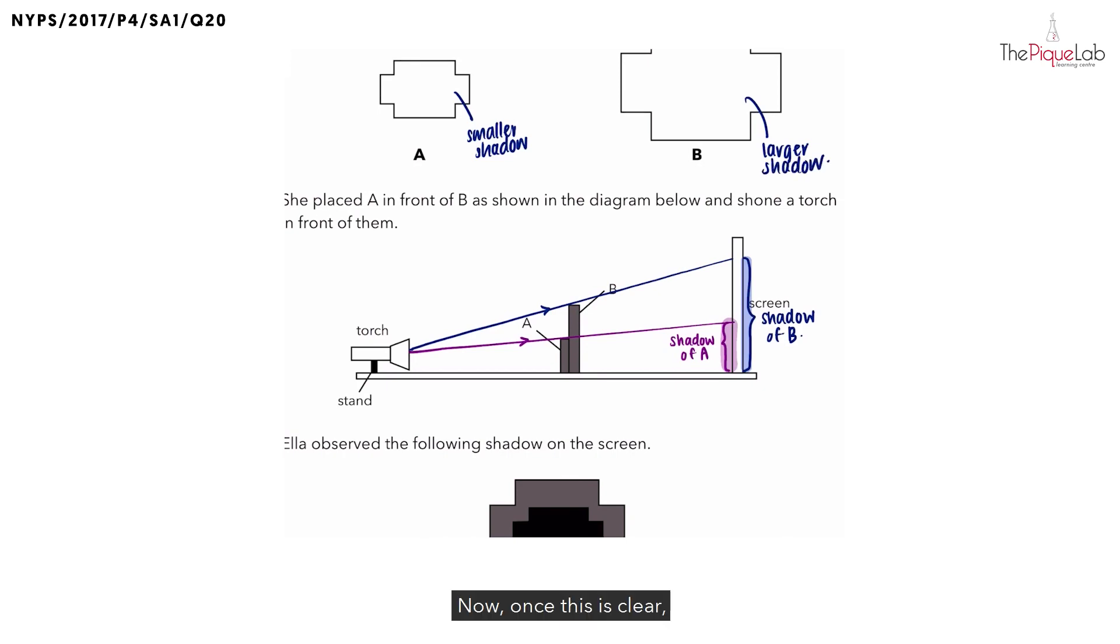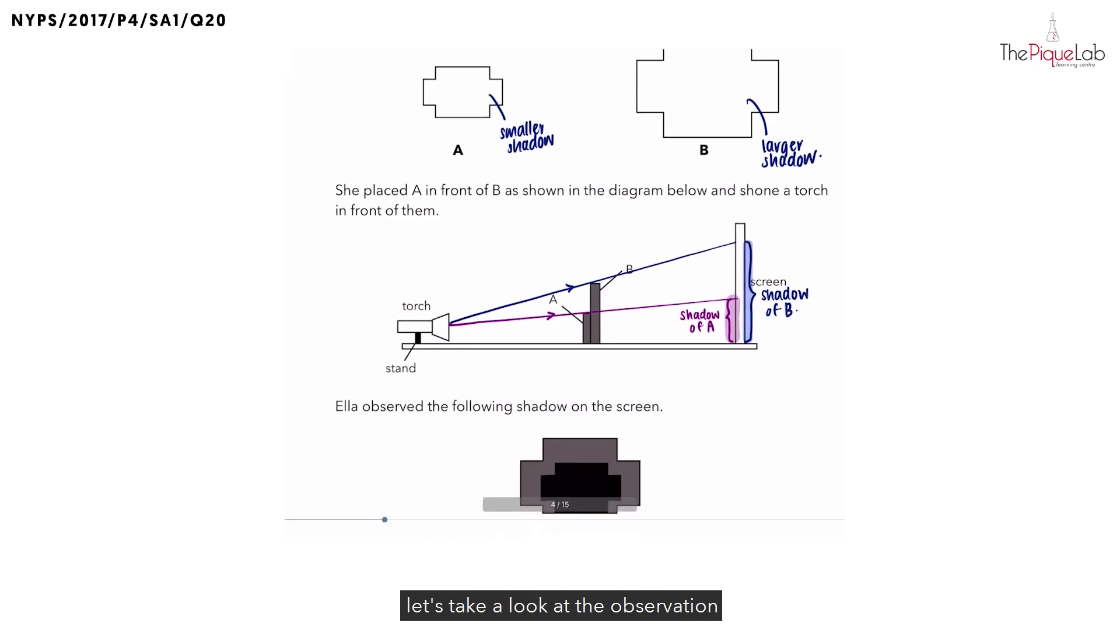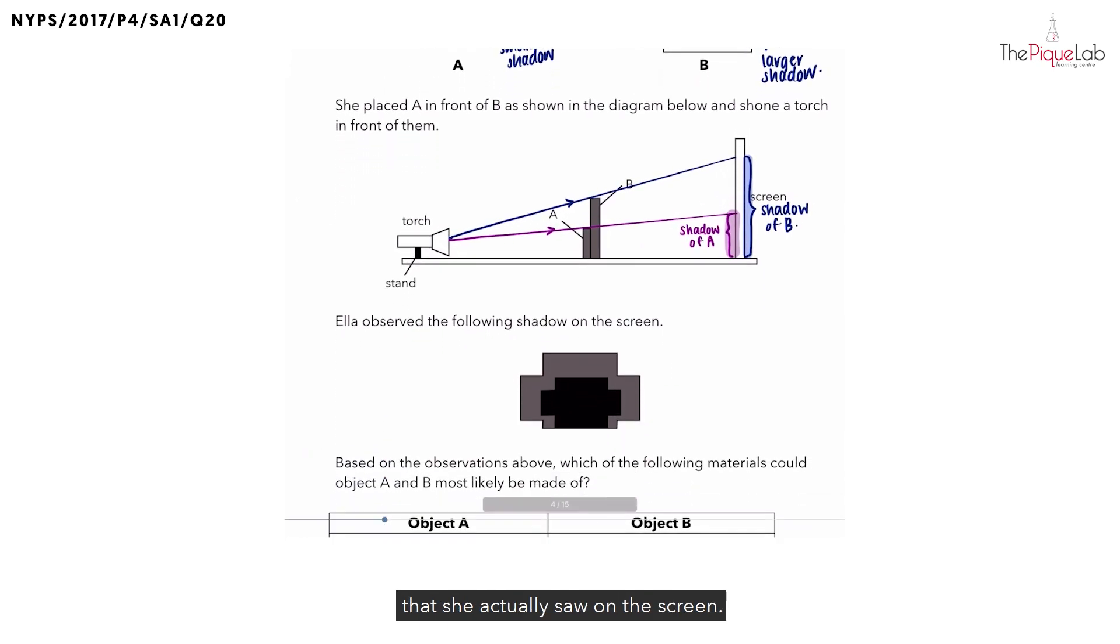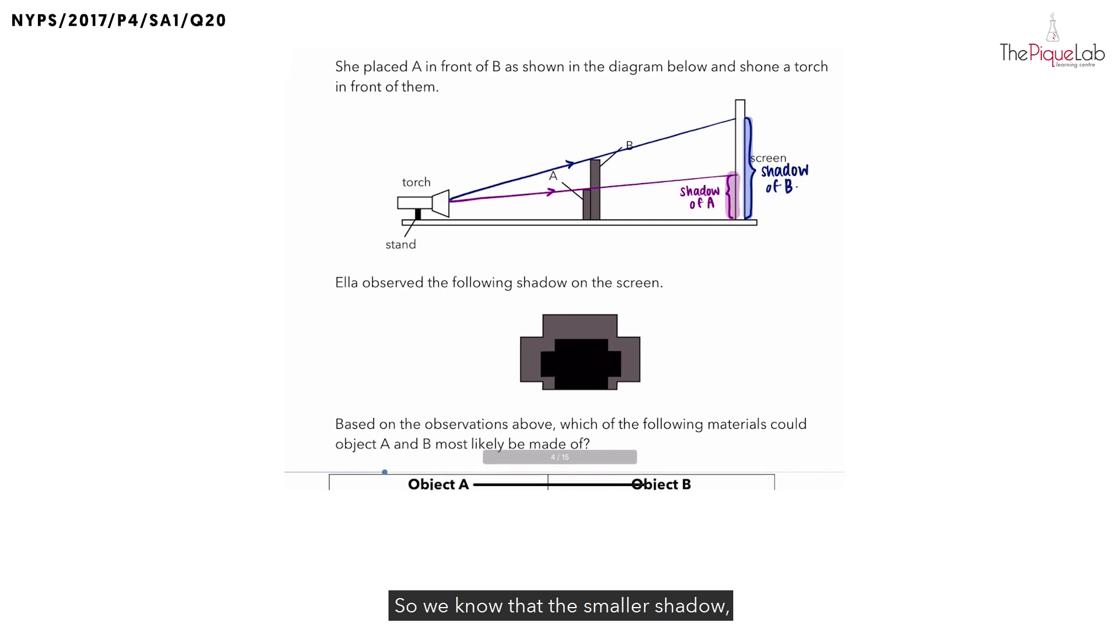Now, once this is clear, let's take a look at the observation that she actually saw on the screen. We know that the smaller shadow, which is the one over here, is actually formed by A. And what do we also notice about the shadow? We notice that the shadow, is it dark or is it faint? Object A actually forms a dark shadow. A dark shadow was formed.